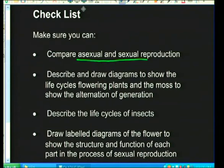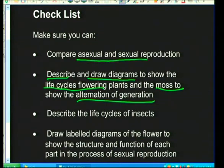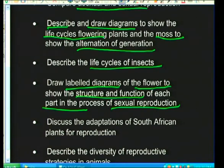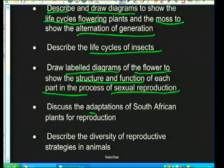You must be able to describe and draw diagrams showing the life cycles of flowering plants and moss to show alternation of generations. You must also describe the life cycles of some insects, draw labelled diagrams of a flower showing structure and function, and discuss adaptations of South African plants for reproduction.